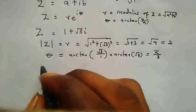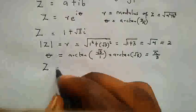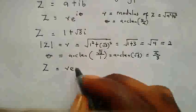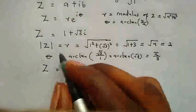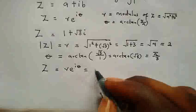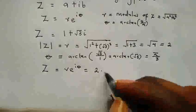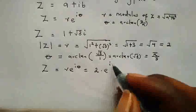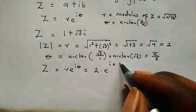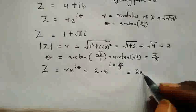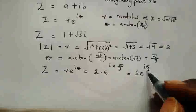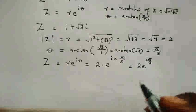So now we can say that our Z is equal to R E raised power I theta and this is equal to our R, our modulus Z is equal to 2 times E raised power I times theta which is pi all over 3. And this is same as 2 times E raised power I pi all over 3 and this is the answer in exponential form.